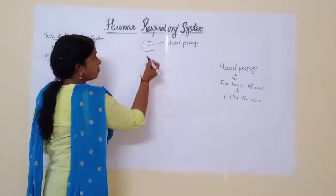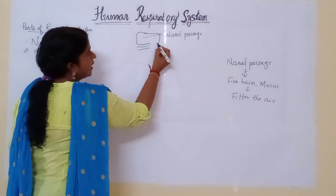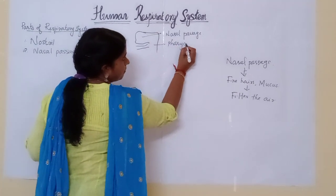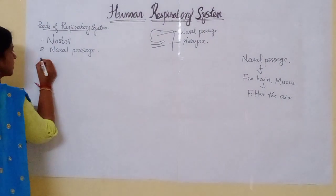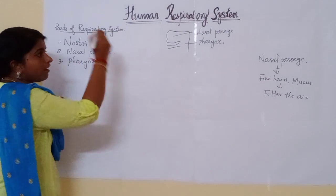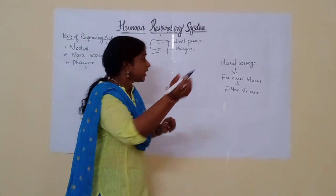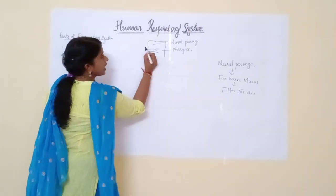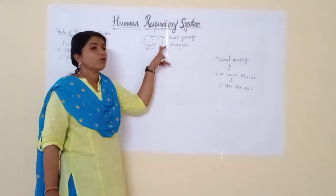Now we can move to the next part — that is the pharynx. The third part is the pharynx. It is the common passage for both food and air. We already learned about the pharynx in the digestive system as well. Here, you can see in the diagram that through this passage, food is coming, and air is also coming.